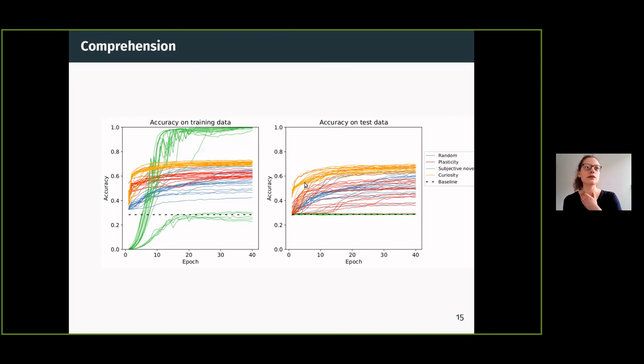Another thing to see is that even after the very first epoch of training, curiosity already has a sort of a leg up. Now you may wonder about subjective novelty, which is the odd one out—these green bizarre lines here—and they are performing exactly at baseline here.